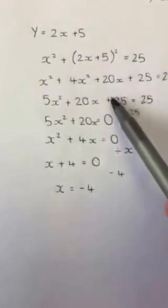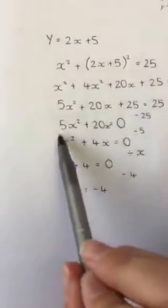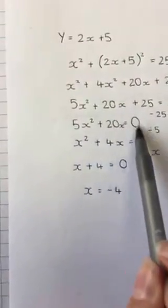What we've then done is minus 25 from this side and that gets us a 0 over here. So it's now 5x squared plus 20x equals 0.